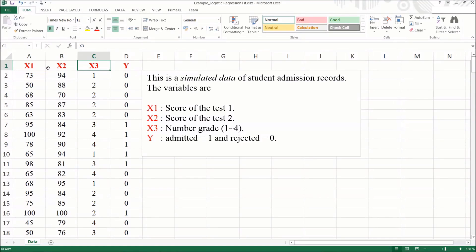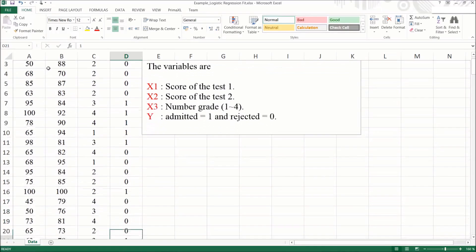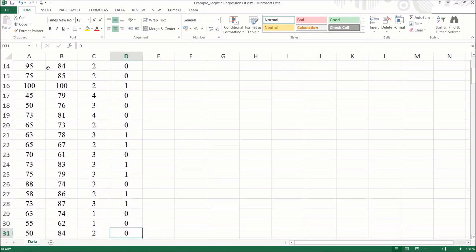The dependent variable or the response is given by the y column. We can see that the y column contains only ones and zeros, as it should.